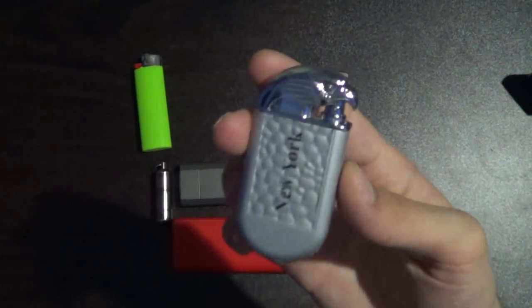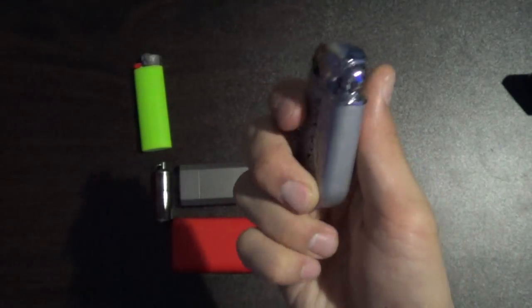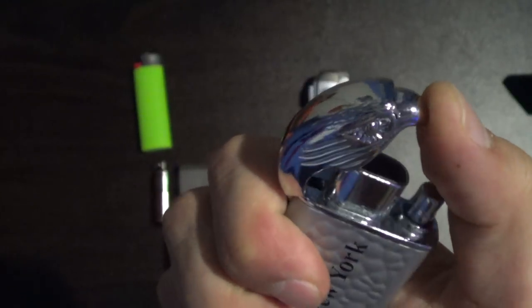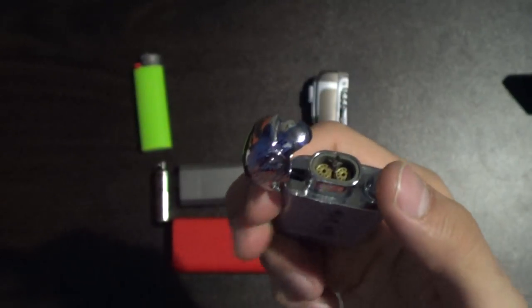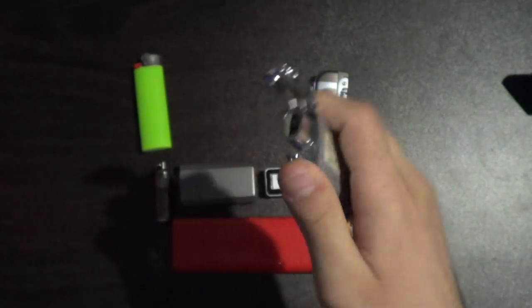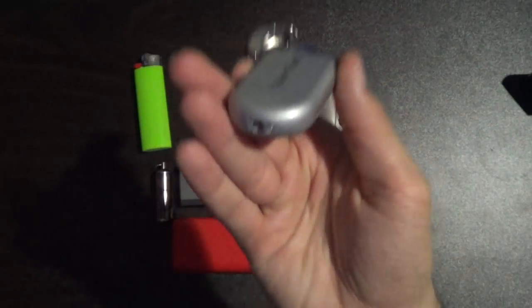Next is this cheap lighter I picked up from a souvenir shop in New York, just because I thought it looked cool, with the eagle head here that flips open, and this one is a butane. Yeah, I kind of have it set to be a torch.